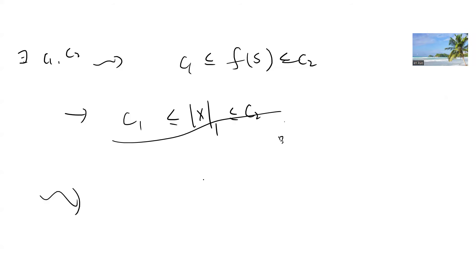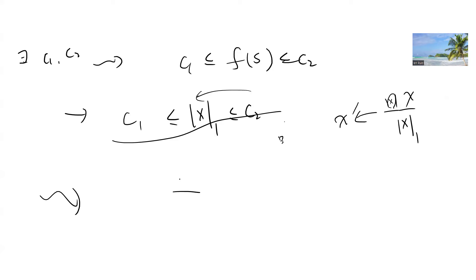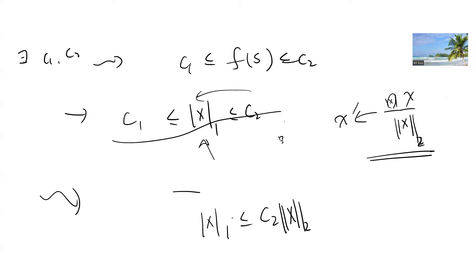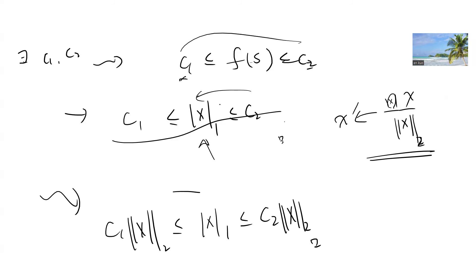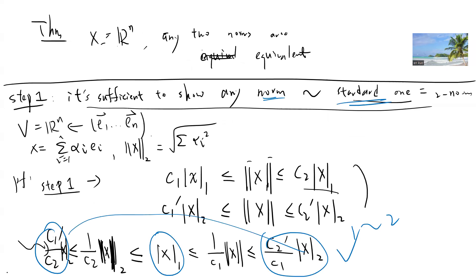So once you have this, you've proven the result on the unit ball. For any general x prime, you can normalize it — divide by its 2-norm — and plug it into the inequality. Then you recover the full inequality for all x. And c1 and c2 are achievable on this compact set. So basically this is an interesting proof. It's an interesting theorem that I wanted to share. See you guys in the next video.